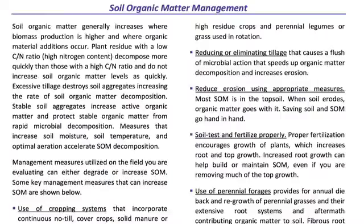Managing organic matter is the next important section — it's really about managing your crops: good rotations, high residue crops, eliminating tillage which causes a flush of microbial activity. Reducing erosion, soil testing and fertilizing properly are also key, because if we over-fertilize we're going to tend to burn up or lose some of our organic matter.